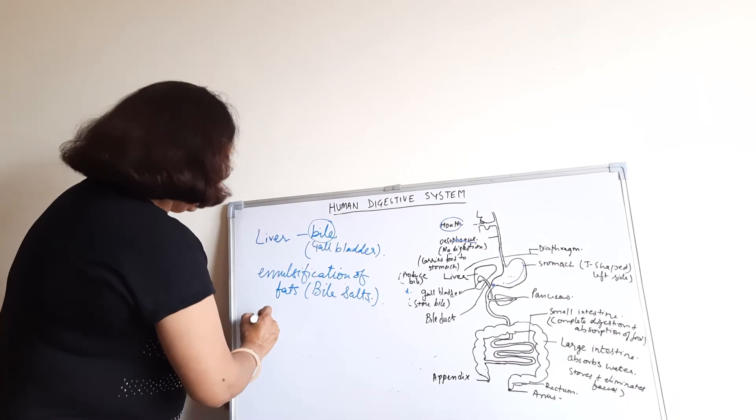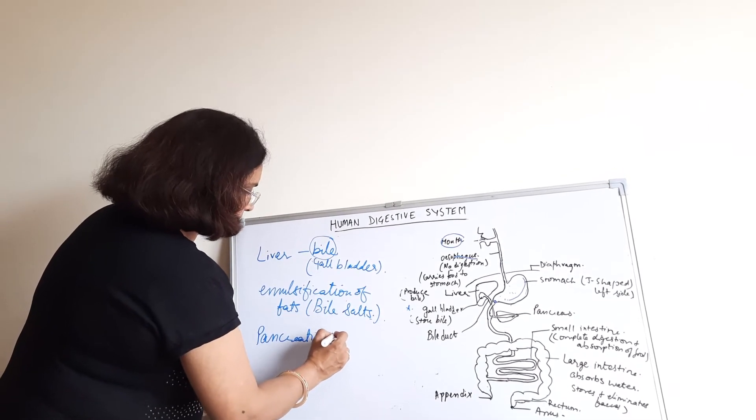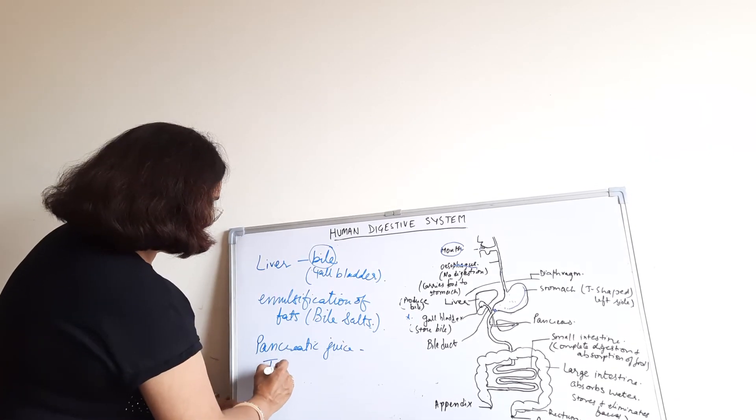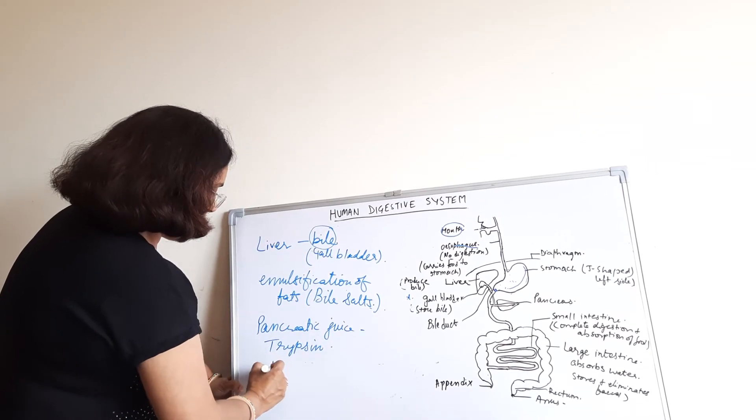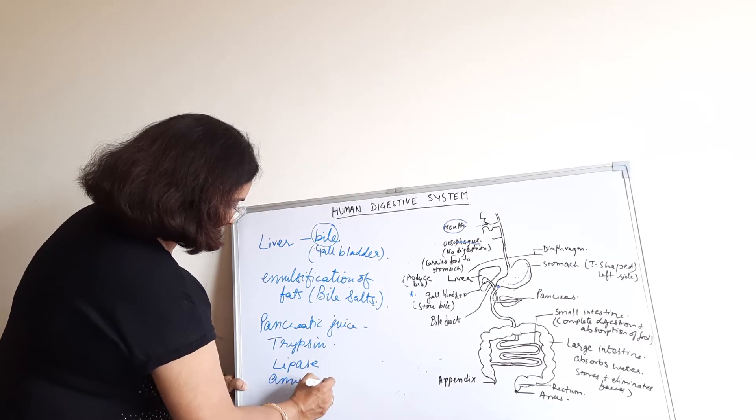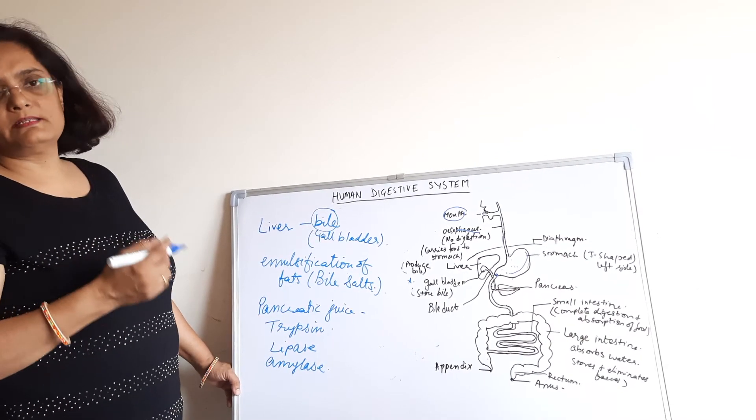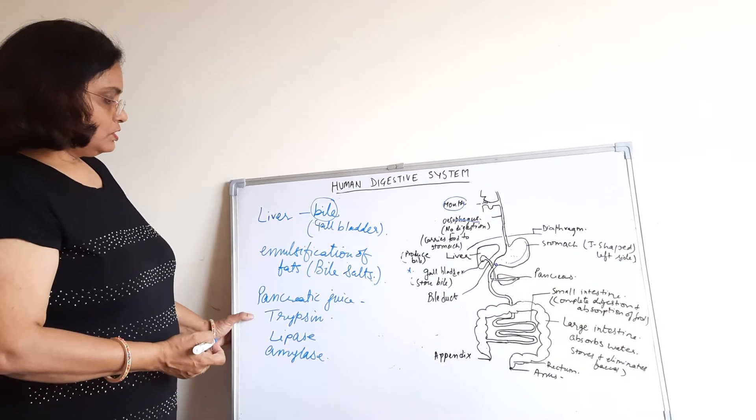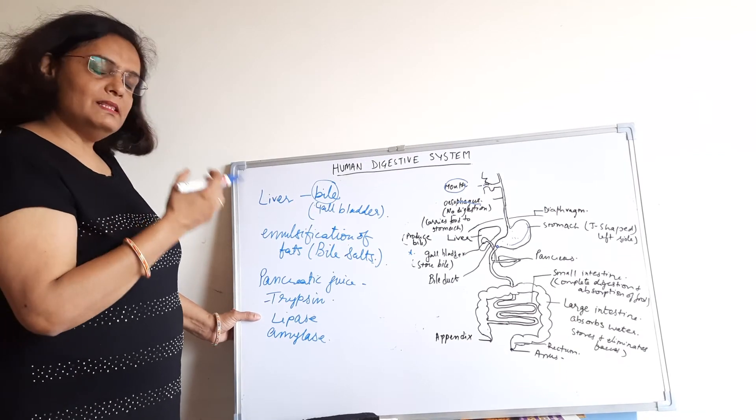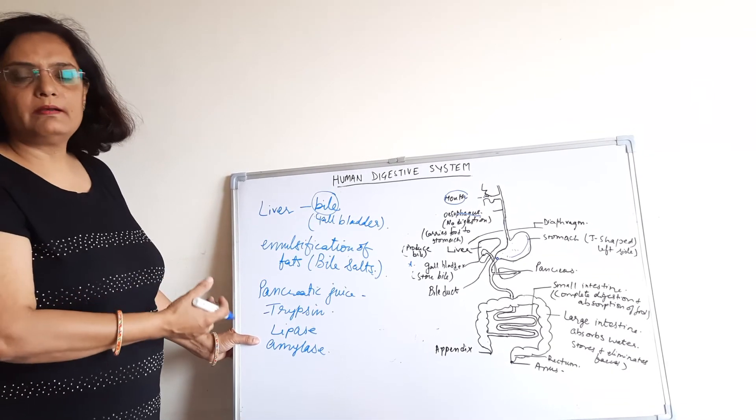Then pancreatic juice is secreted by pancreas. It contains trypsin, lipase, and amylase. In small intestine, proteins, fats, carbohydrates, all three are digested. Trypsin digests protein, lipase digests emulsified fats, and amylase digests carbohydrates.